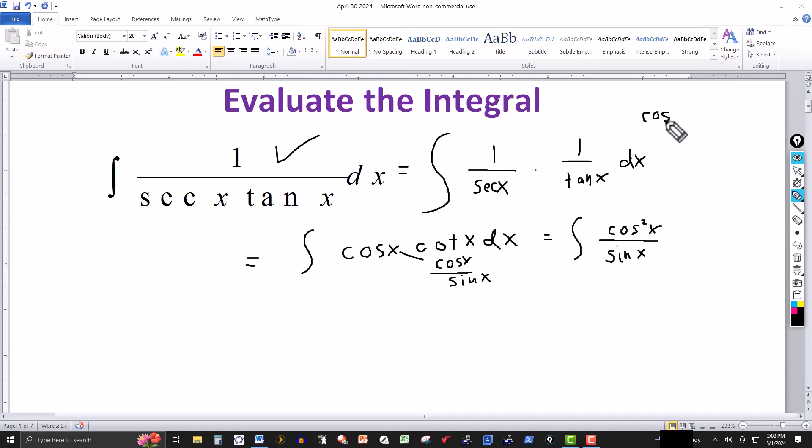I know that there's an identity that tells me that cosine squared of an angle, in this case x, plus sine squared of that angle is equal to 1. So taking this over I can rewrite the cosine squared.